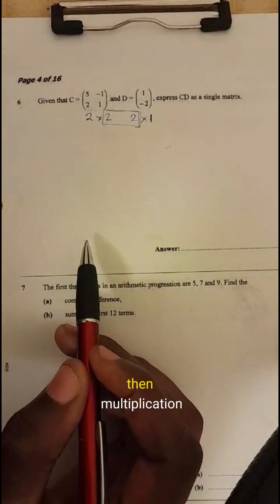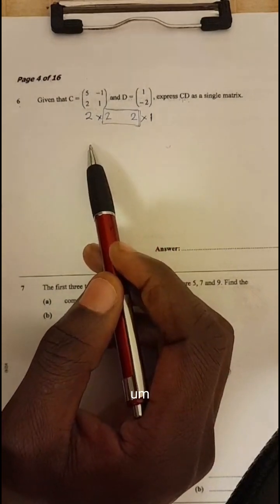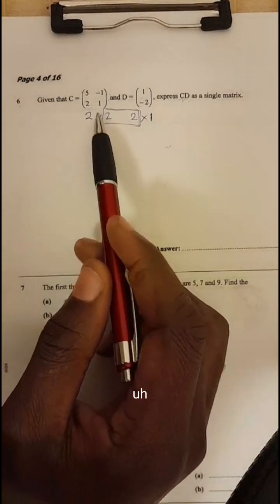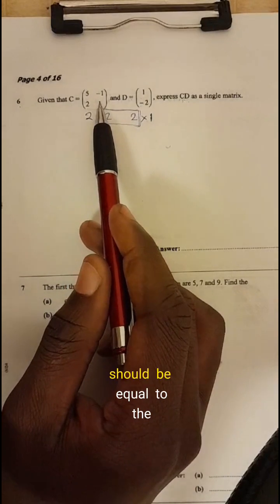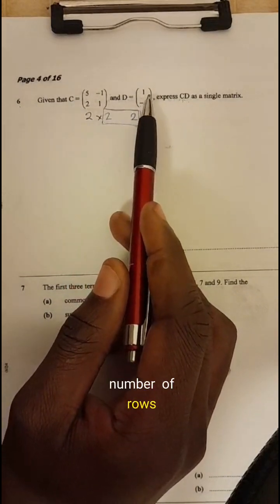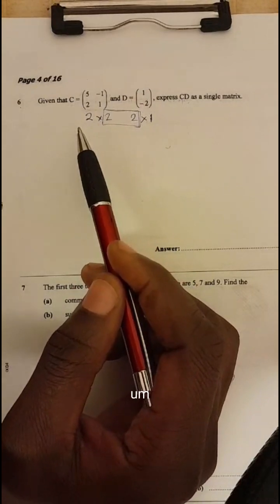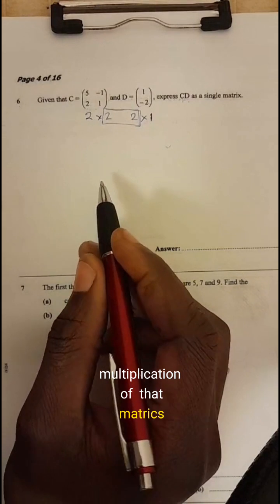In other words, the number of columns of the first matrices should be equal to the number of rows of the second matrix. Then multiplication of that matrix exists.